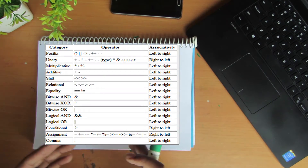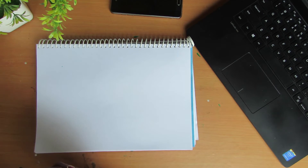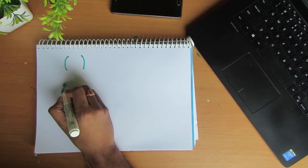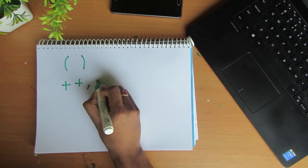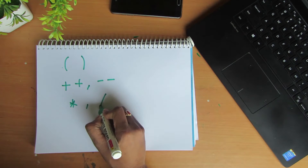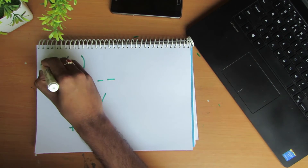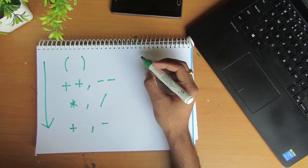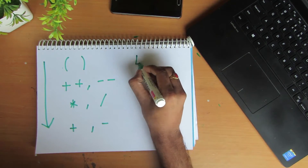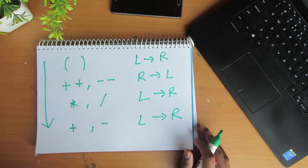Here you will see the precedence chart for the C language. From this chart we will be considering a few operators: parentheses, unary operators such as ++ and --, multiplicative operators such as multiplication and division, and additive operators such as plus and minus. These are listed in precedence order. Regarding associativity: parentheses are left to right, unary operators are right to left, and additive operators are left to right.